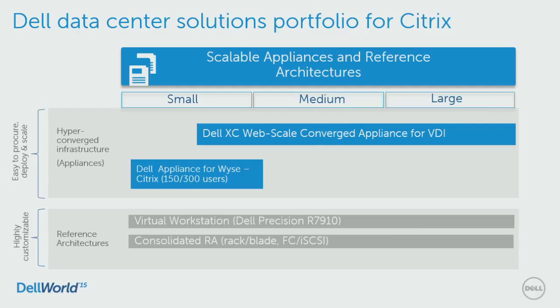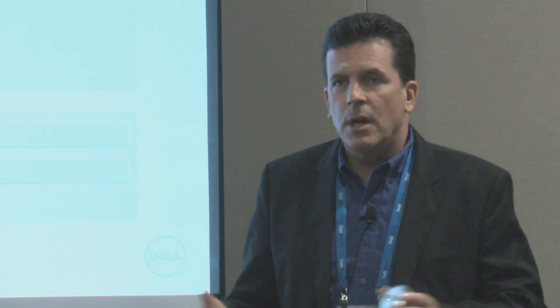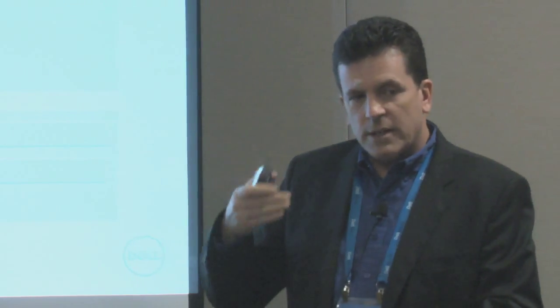We've also taken all this logic and built appliances — and this is a real breakthrough. The Dell Appliance for Wyse for Citrix is prescribed for either 150 dedicated or 300 shared users. You pop this appliance in — it's two rack units tall — you follow a four-step wizard and you're up and running with a VDI implementation. If you want 150 or 300 more, you pop in another one. We've taken the complexity out and it's prescribed — like getting a prescription at the drugstore. It also contemplates all the licensing as a single SKU, including the CALs, so you know exactly how much it's going to cost per user.